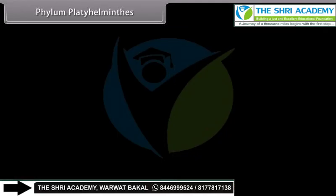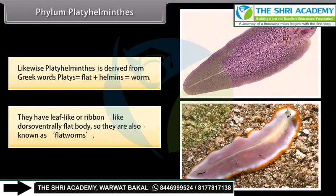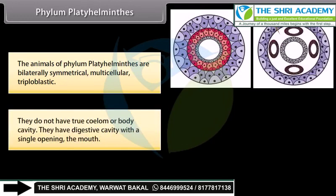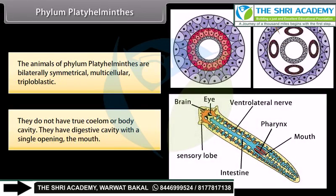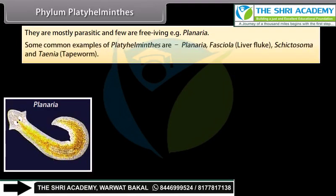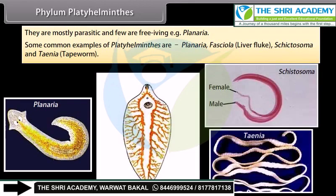Phylum Platyhelminthes. Platyhelminthes is derived from Greek words: platis, meaning flat, plus helminthes, meaning worm. They have a leaf-like or ribbon-like, dorsal-ventrally flat body, so they are also known as flatworms. The animals of Phylum Platyhelminthes are bilaterally symmetrical, multicellular, and triploblastic. They do not have a true coelom or body cavity. They have a digestive cavity with a single opening, the mouth. They are mostly parasitic and few are free-living, e.g. Planaria. Common examples are Planaria, Fasciola (liver fluke), Schistosoma, and Taenia (tapeworm).